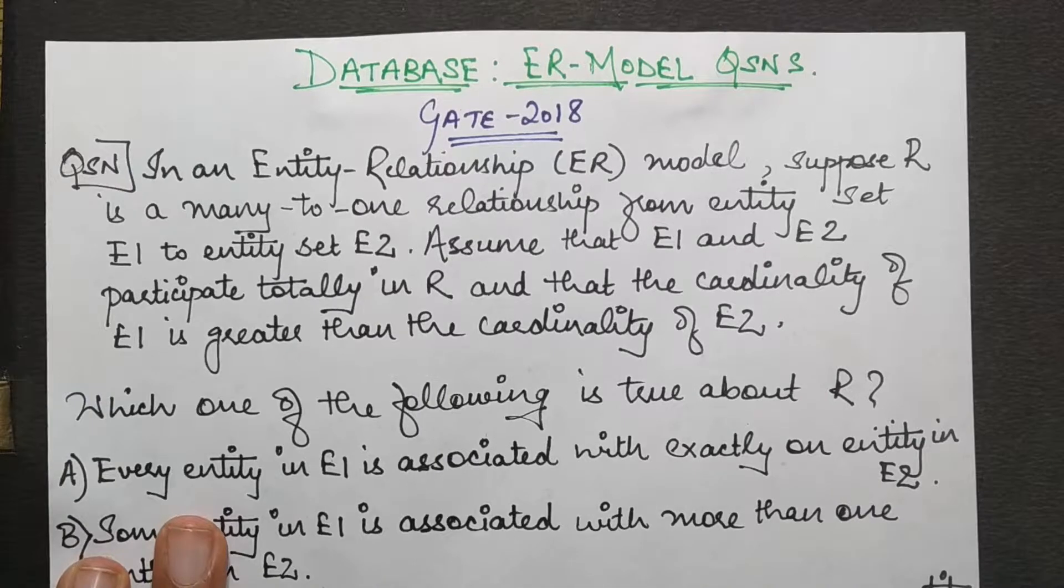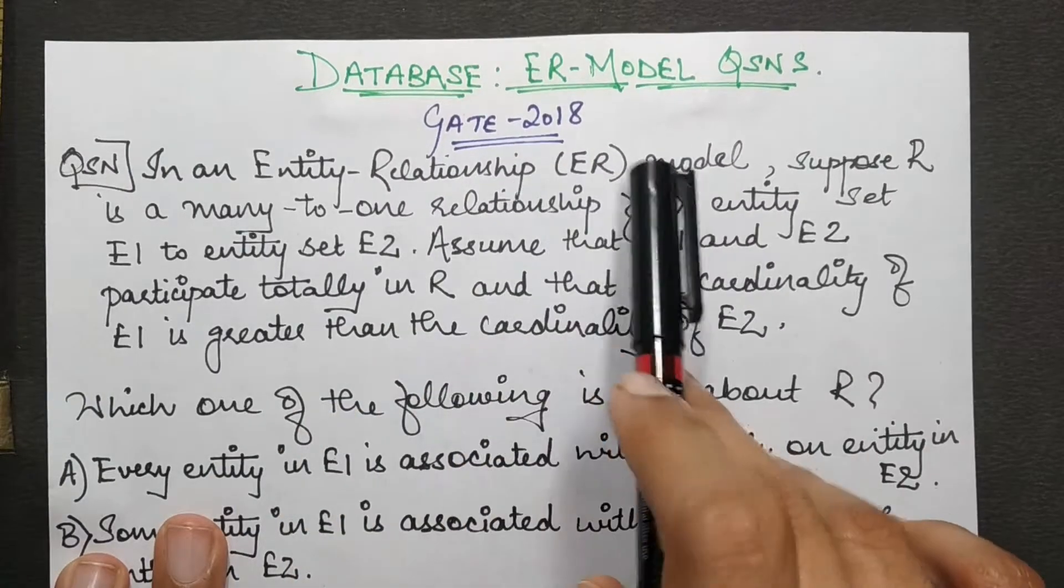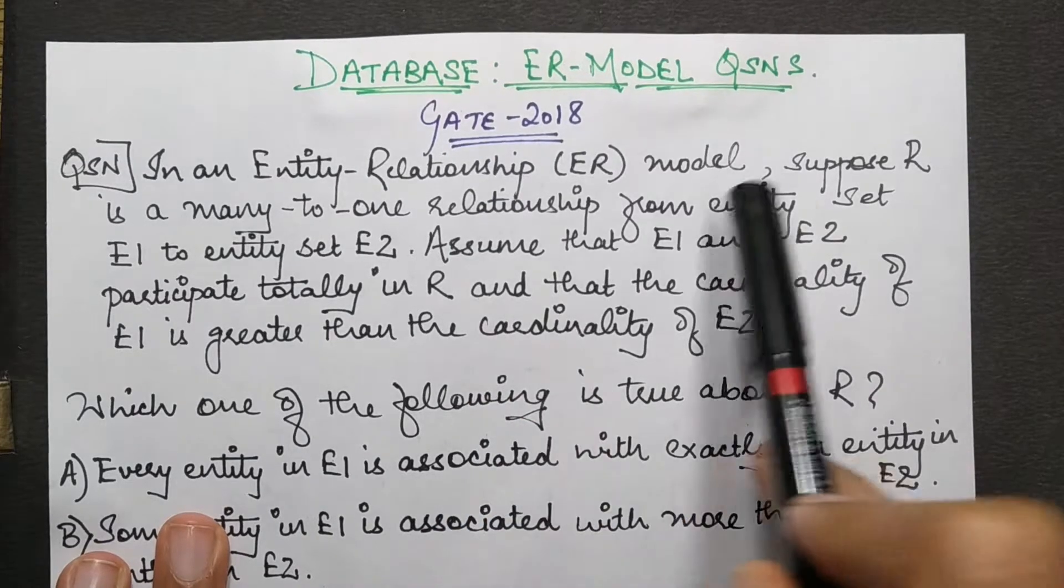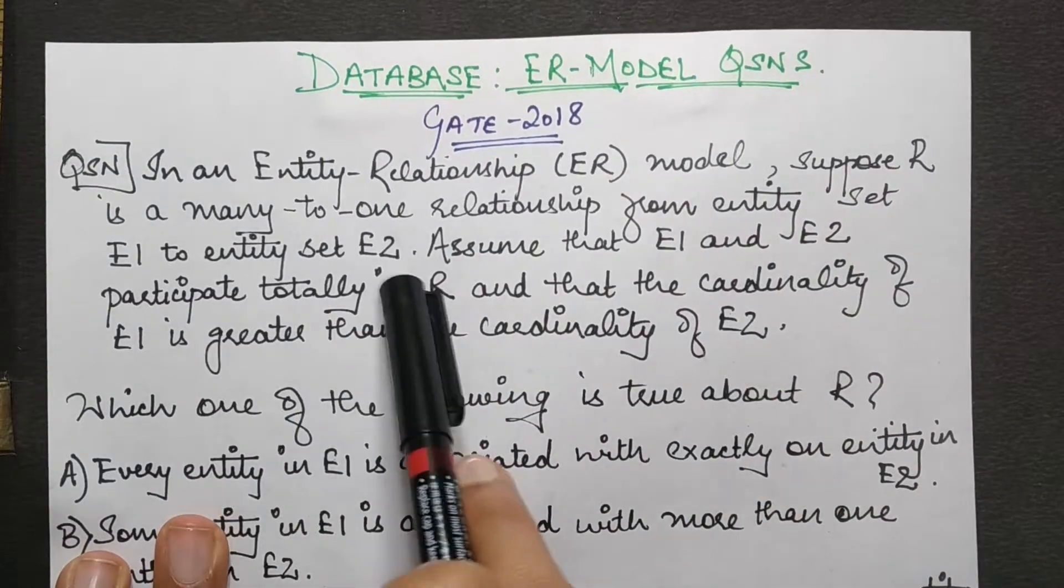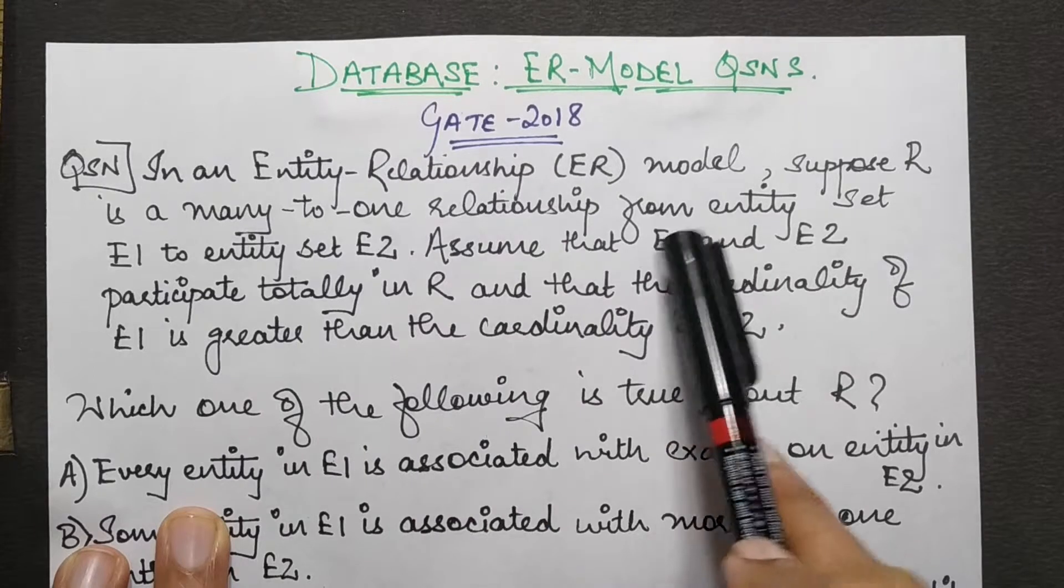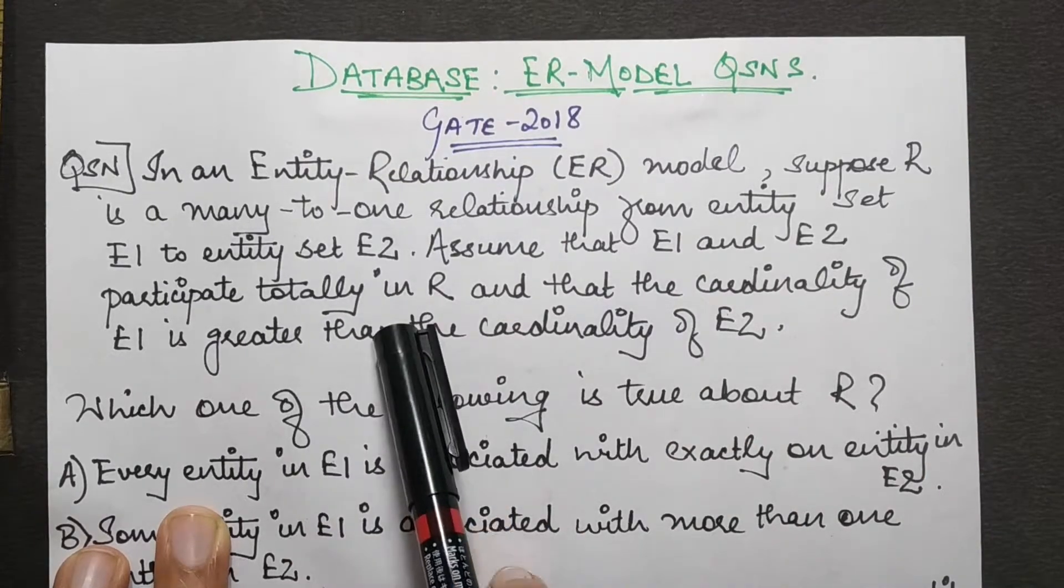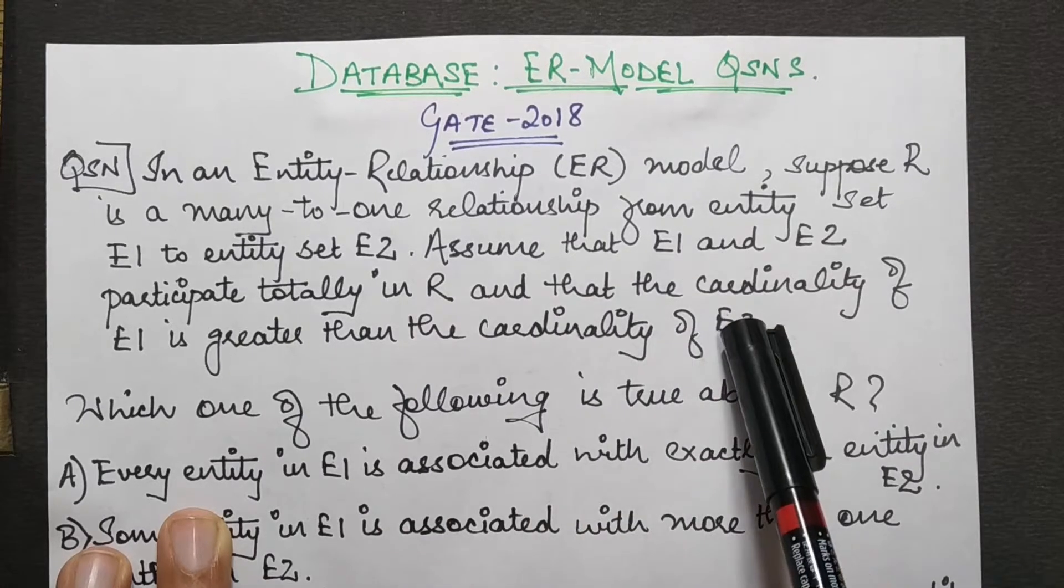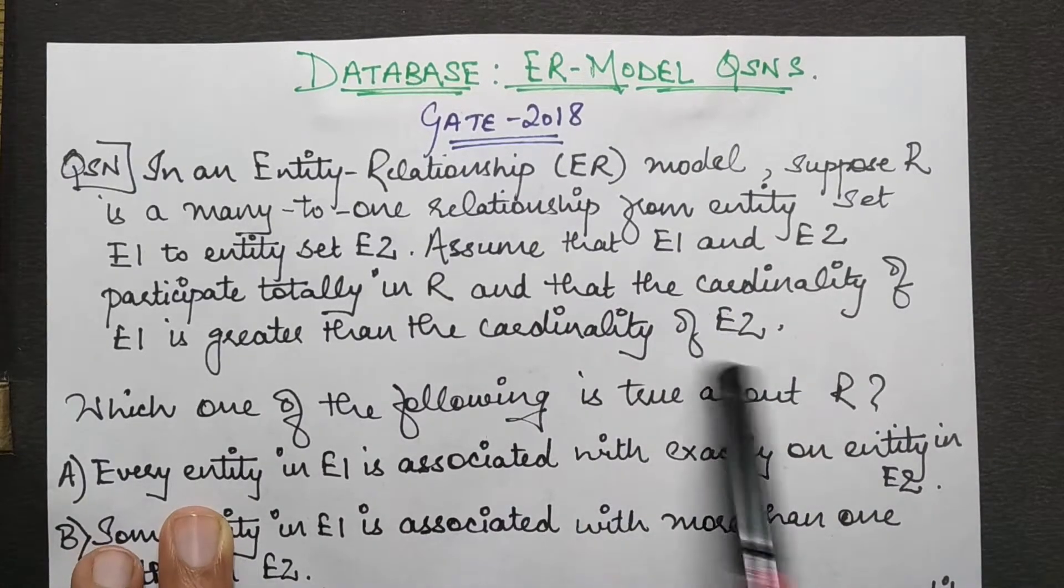The question states that in an entity relationship ER model, suppose R is a many-to-one relationship from entity set E1 to entity set E2. Assume that E1 and E2 participate totally in R and that the cardinality of E1 is greater than the cardinality of E2. Then which of the following is true?